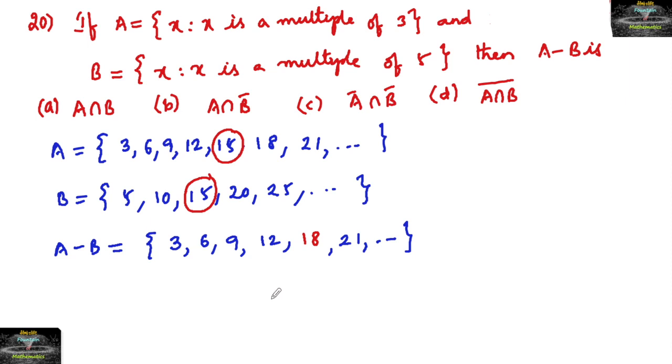So this is your A minus B, and generally when comparing with the options, A minus B is nothing but A intersection B complement. So even without any given set here, we can also mention that A minus B is equal to A intersection B complement. This always holds correct. So we can go with option B.